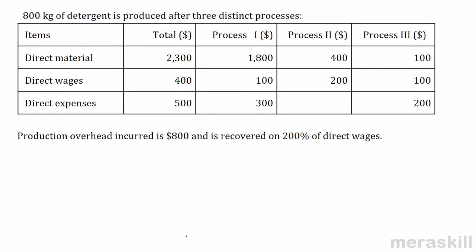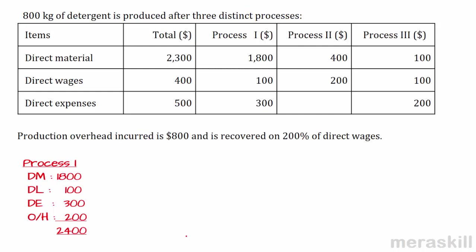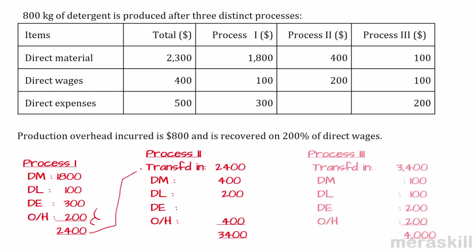We ascertain the cost of each process separately. Total cost of process one: $1,800 + $100 + $300 + $200 overhead = $2,400. This gets transferred to process two as a transferred-in cost, where we add further materials, wages, and overhead of $400, giving $3,400. From process three, materials $100, labor $100, direct expenses $200, overheads $200 (200% of direct wages), and total cost is $4,000. We do ascertain the cost of each process — process one, process two, process three.